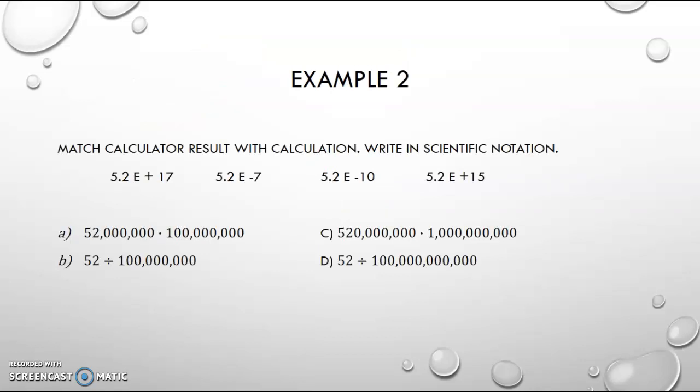So that brings us to our next example. We want to match our calculator result with the calculation written in scientific notation. So here are my calculator results, and then here are our different calculations. I'm going to start by going down to the calculations and then bringing them up and matching them with these up here. So if I am multiplying, then I am increasing my number. My number is going to get bigger.